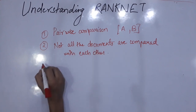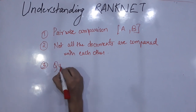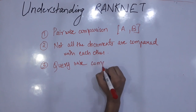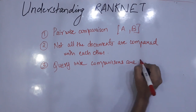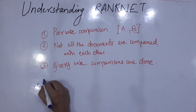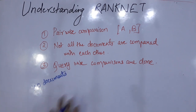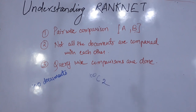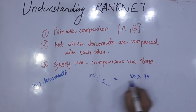Third point: querywise comparisons are done. This means that, say we have a total of 100 documents and we have to rank all 100 — that is, decide which document comes above the other. If we compare one document with another (pairwise), we have to compare 100C2 documents — that is, 100 × 99 / 2 possible combinations.